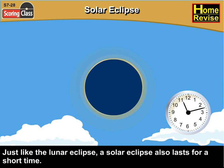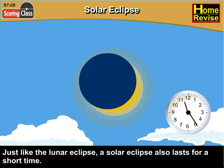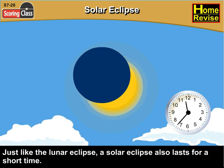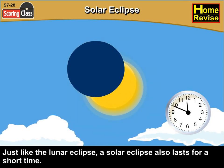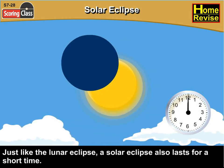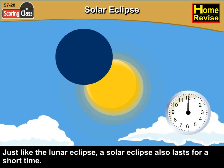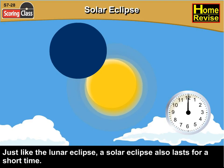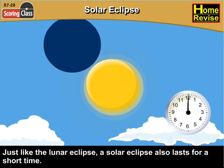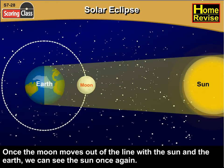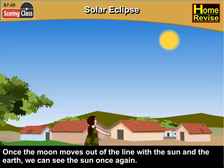Just like the lunar eclipse, a solar eclipse also lasts for a short time. Once the moon moves out of the line with the sun and the earth, we can see the sun once again.